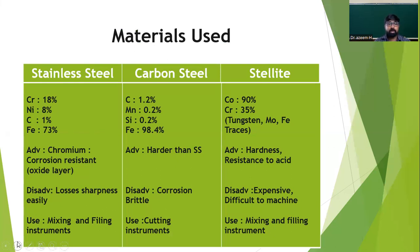Presently, stainless steel instruments are available and are mainly used for fabrication of mixing and filling instruments. The main advantage of stainless steel is the property of passivation, because stainless steel contains chromium. This chromium forms a passivating oxide layer that is corrosion resistant. The problem is it loses sharpness easily during repetitive sterilization cycles. Another material called stellite consists of about chromium 35% and trace amounts of tungsten, molybdenum, and iron. Its advantages include hardness and resistance to acid attack, but it is very expensive and difficult to manufacture, and is particularly used for mixing and filling instruments.